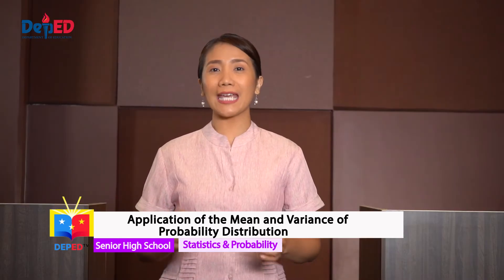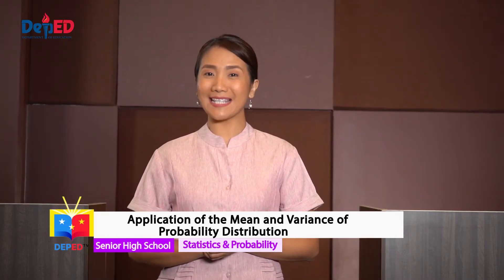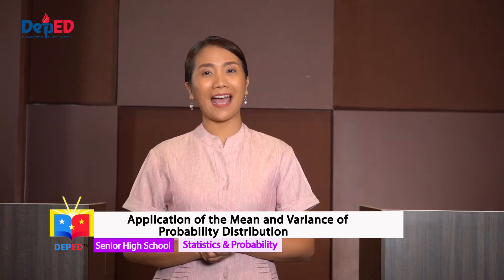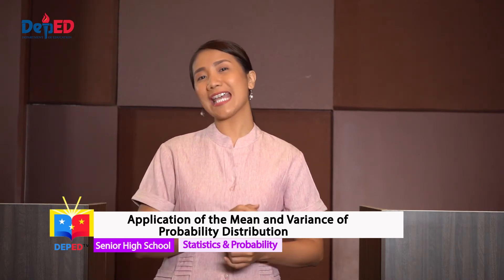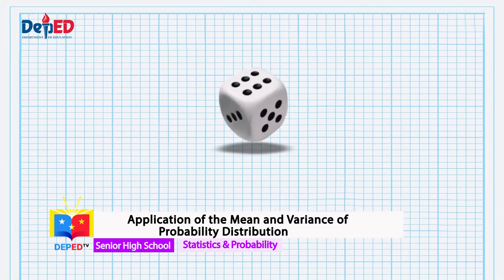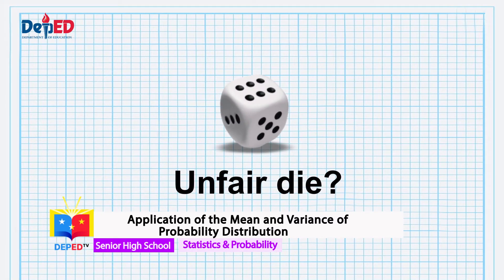Were you able to get the right decision on the two problems? That's alright if you didn't get both, as we are just having our warm-up. Have you heard of an unfair die? Yes, there is such a thing as an unfair die. This happens when one face of a die has a greater probability of occurring than another.